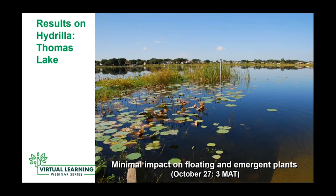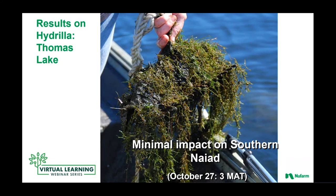Looking at the pictures, we've taken so much of that biomass out of the water body, but there's still minimal impact on floatings — water lilies, spatterdock, cattails — a lot of the material they really wanted for fish habitat and other reasons around the lake. At three months after application, those desirables are still there, still thriving. And there we are with the rake pull at three months — it was easy to find the niad out there. For those in the aquatic world, it's much easier to pull niad than hydrilla.